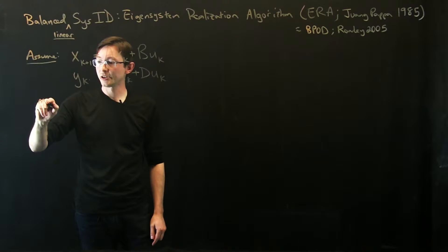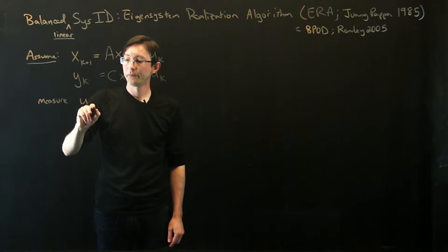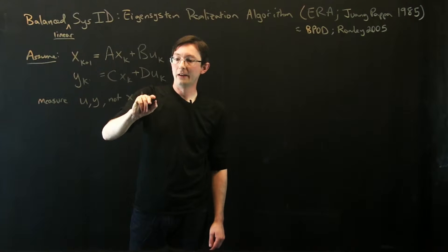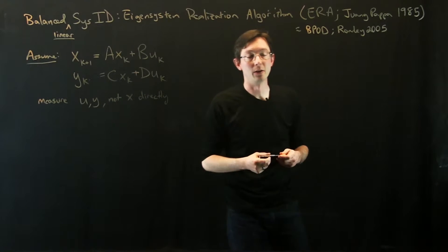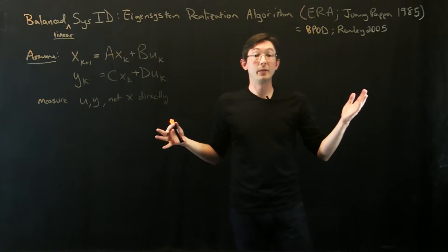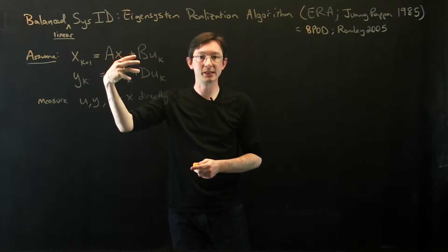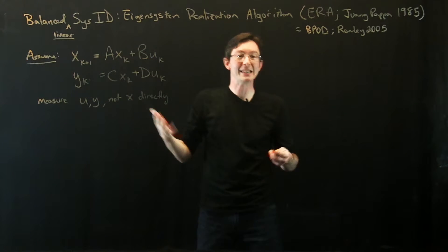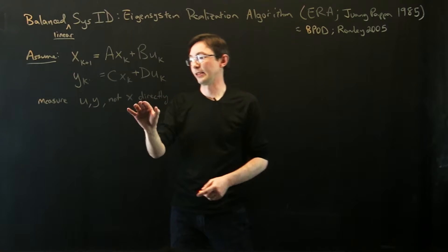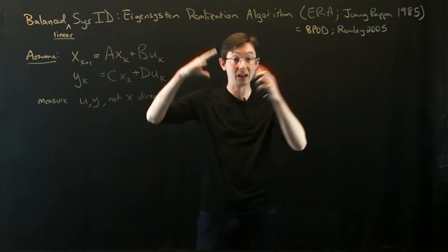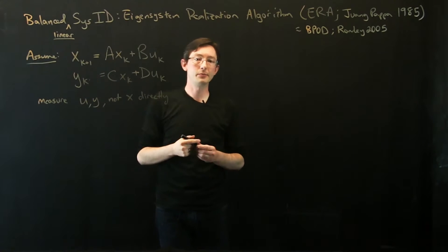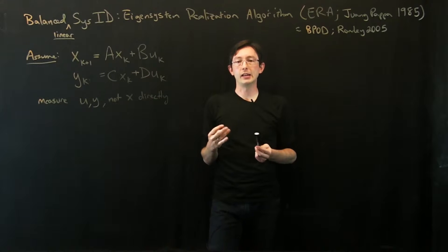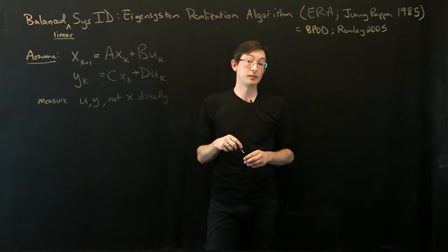And for now, I'm just going to assume that there might be the possibility of a feed-through term, so that my actuation U directly gives an impact on my measurement Y. So I have these four matrices, A, B, C, and D. Now, I do not assume that I know what these are. All I'm assuming is that my system can be described, the input-output dynamics of my system can be described in terms of some linear system. So we also assume that we measure U and Y, but not X directly. In fact, I don't even know what the state of my system is. I don't know what those variables even mean. I'm going to get some latent variables, some hidden variables that are necessary to describe the input-output dynamics, but they might have nothing to do physically with things in my system. So we can measure U and Y, but we can't measure the big full state of my system directly. This is kind of the assumption. So the other assumption is that I can do what's called an impulse response experiment.